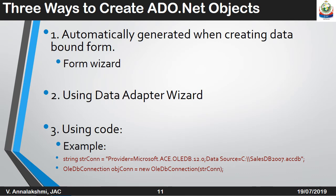There are three ways to create ADO.NET objects. The first is automatically generated when creating a data-bound form using the form wizard. The second is using the data adapter wizard. The third is using code. If you are using code, the connection string would be: string connection = provider name Microsoft.ACE.OLEDB.12.0 and the data source where you store the database — that is the Microsoft Access database. Next, the OLEDB connection object indicates the string connection.